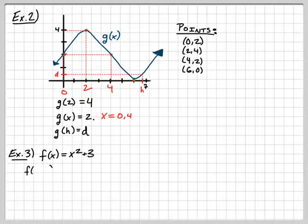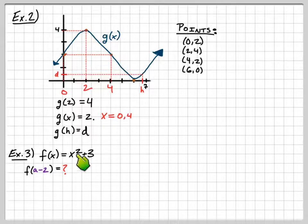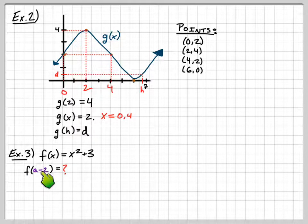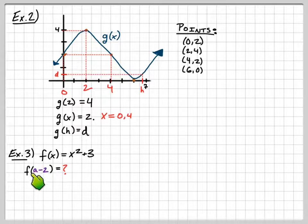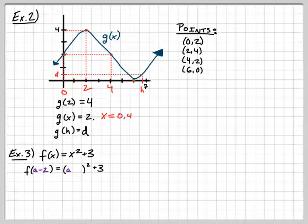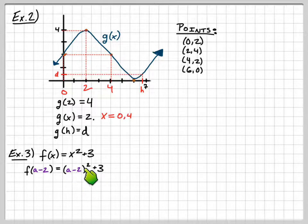Example 3. I'm going to give you the function f of x equals x squared plus 3. My first question is: what is f of a minus 2? That means plug in a minus 2 wherever you see an x. Don't make the mistake of squaring this as a squared and then 2 squared separately — you have to FOIL it out. So we have the quantity (a minus 2) squared.